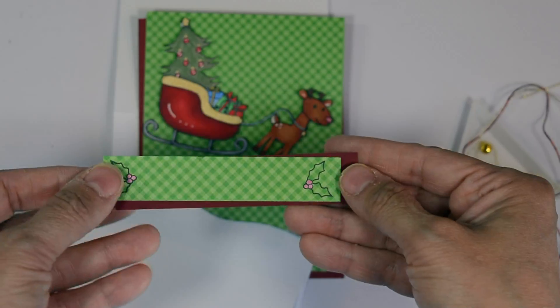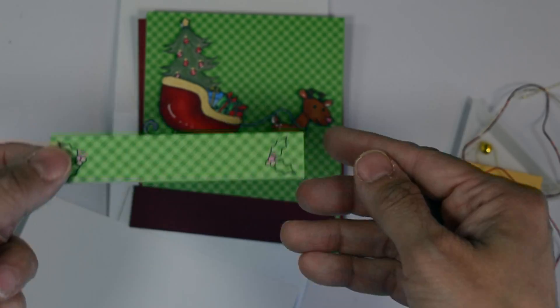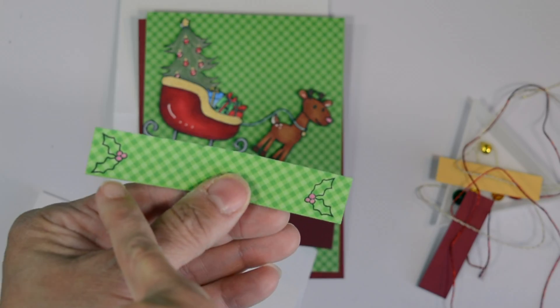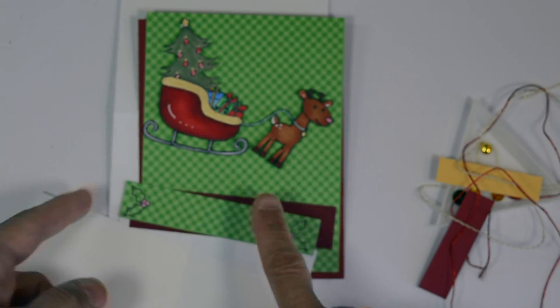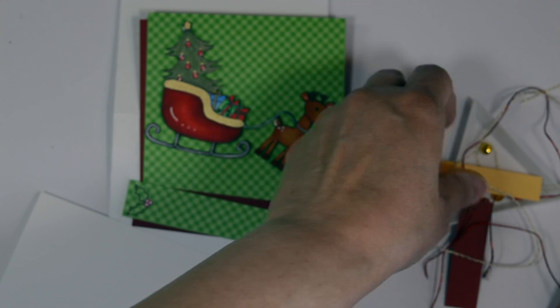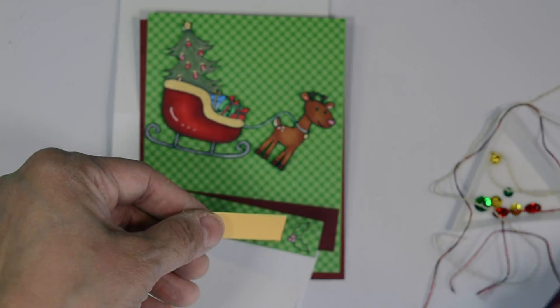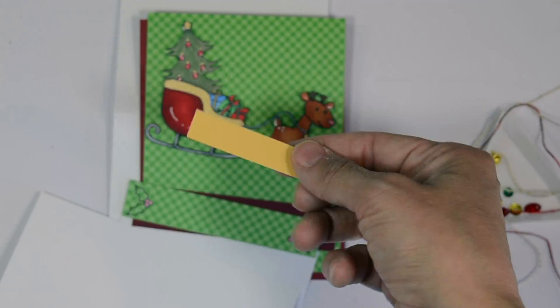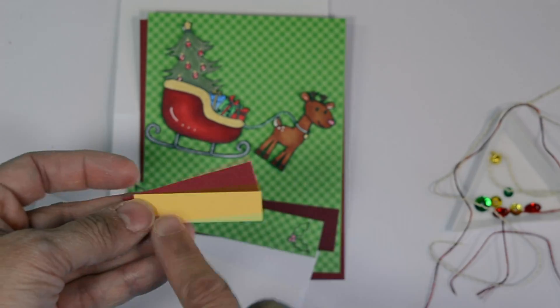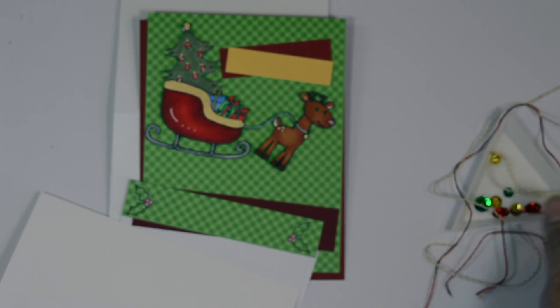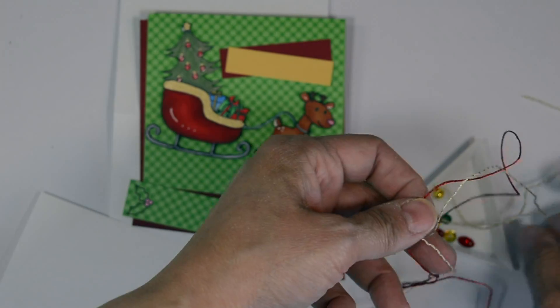So I also used some of that, a scrap of that dark red cardstock for matting this piece of patterned paper, the same gingham paper. And that'll be for our stopper. And I stamped the holly and berries and colored in the berries with some of the Sakura pen. I brought in this gold cardstock to best match the gold in our sled. And that's where our sentiment will be.